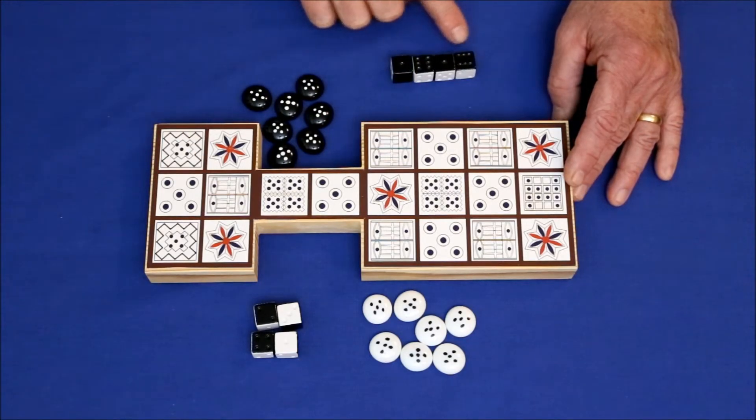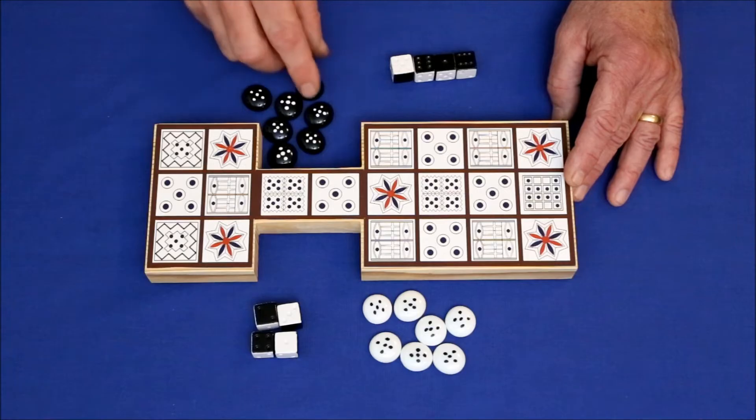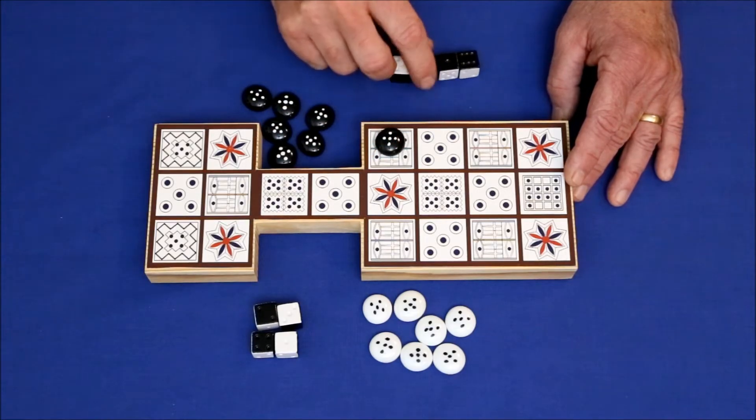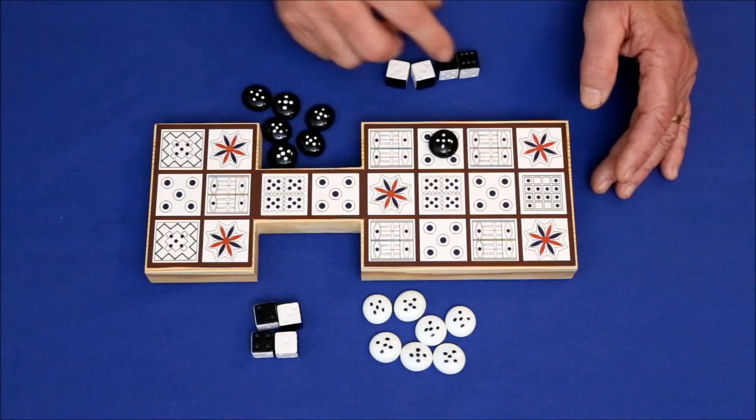If a roll turns up all four black, you lose a turn. It counts as a zero. If you roll and one comes up, you get to move a piece one place. Two, two places, and so on, up to four places.